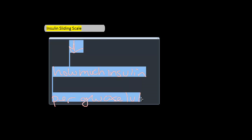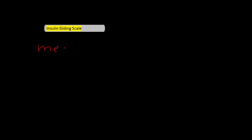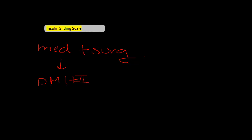You will see this insulin sliding scale used mainly in medicine and surgery because at different points during a patient's hospital stay, they may be taken off one or more of their hypoglycemic medications and thus require extra monitoring to make sure their glucose is in check. On the medicine wards, you'll see the sliding scale used in type 1 and type 2 diabetics. However, on the surgical floors, this population is expanded to most everyone, as surgery and stress are said to have a negative impact on glycemic control, and higher levels of glucose impair wound healing and alter the immune response.